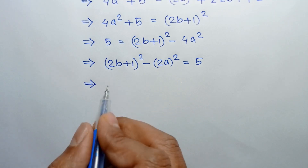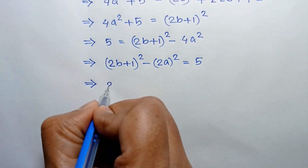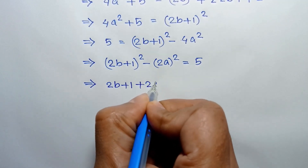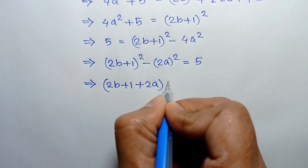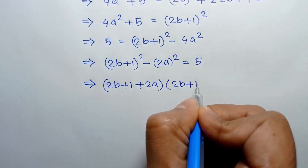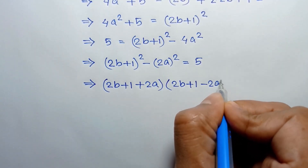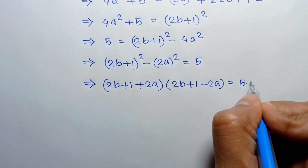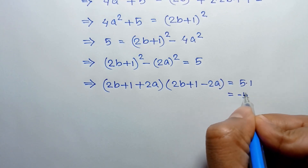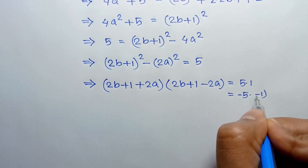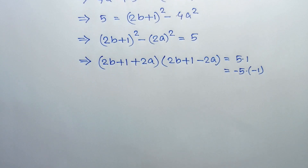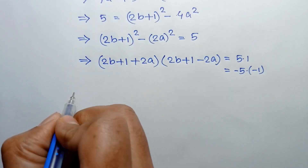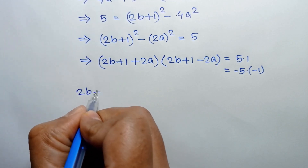Applying the formula a² − b² = (a+b)(a−b), we can write (2b+1+2a)(2b+1−2a) = 5. This can be factored as 5×1, or −5×−1.